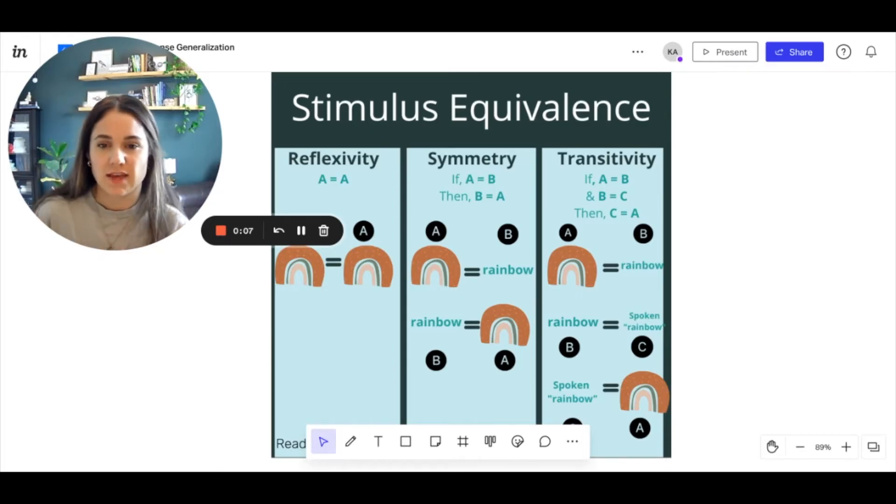So let's look at a basic example and talk about what it means to have stimulus equivalence. When we think of stimuli and we think of stimulus classes, we know that they all have relevant features and they are equal in some way. In this example, though, we're going to look at reflexivity, symmetry, and transitivity.